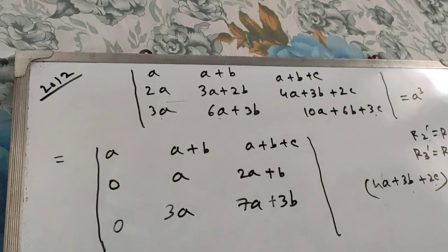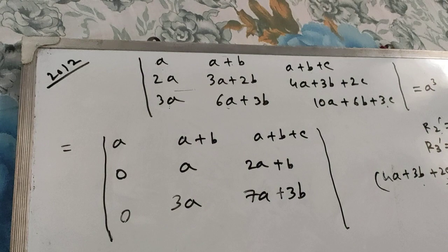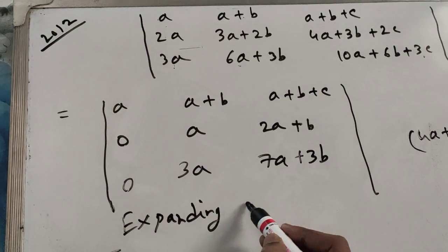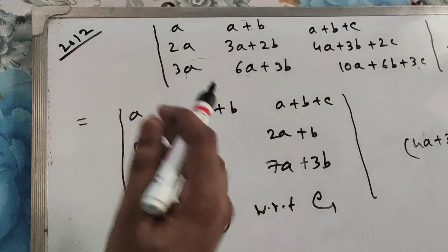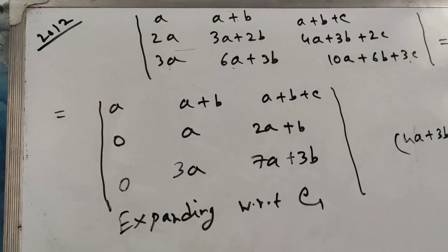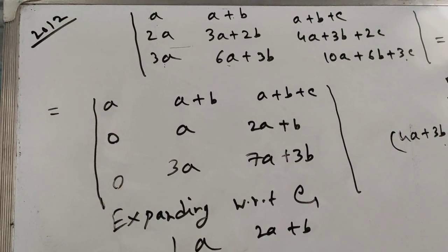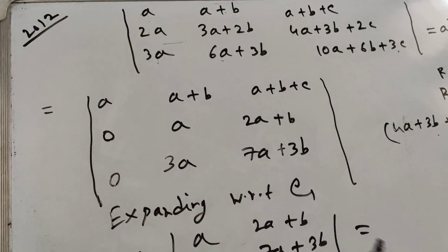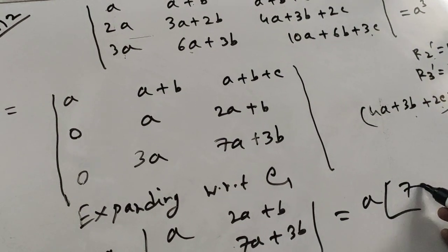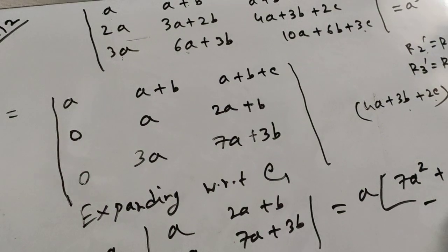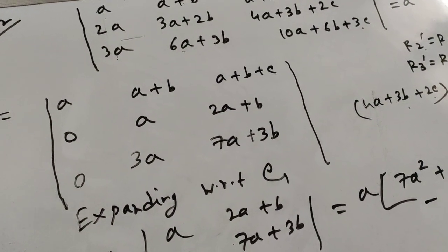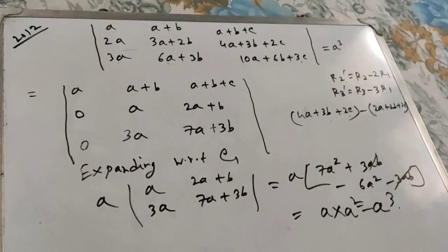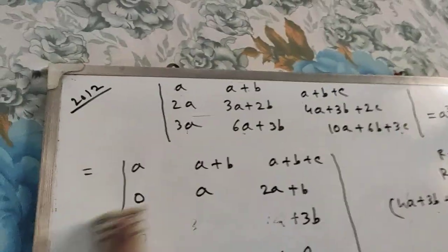In the first column two zeros have come, so we are expanding with respect to C1, column one, because it will be easier. You get a into the 2x2 determinant: a, 2a+b; 3a, 7a+3b. After calculating: a into (7a² + 3ab minus 6a² minus 3ab) — the 3ab terms cancel — giving a into a², which equals a cubed. Proved.